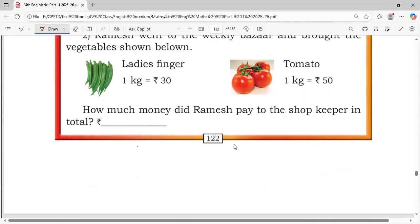Next, ladies finger price for 1 kg is 30 rupees. Tomato price for 1 kg is 50 rupees. Do it mentally. How much money did Ramesh pay to the shopkeeper? In total, rupees 80. 50 plus 10, 60. Remaining 20. That means total 80 rupees.